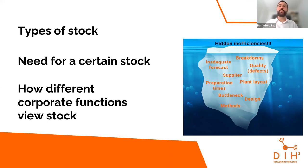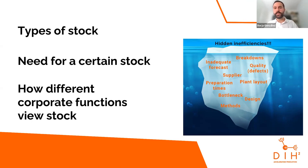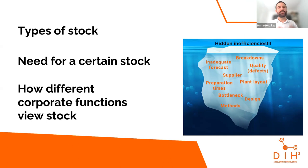There are many hidden inefficiencies that we might not be immediately aware of — inadequate forecasting, breakdowns in the chain, supplier failures, price increases, the need to change plant layout, or bottlenecks in production. You need to be aware of all these in order to manage stock efficiently. Also very important is how different corporate functions view stock.